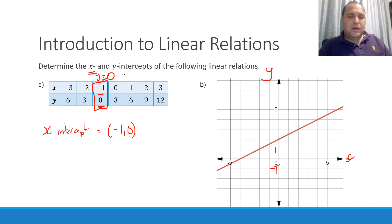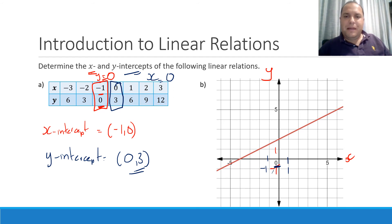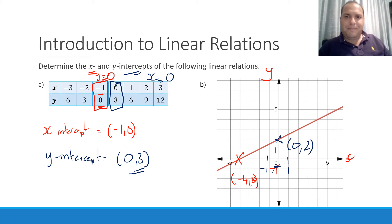For our y-intercept, the same sort of idea, but this time we want to know when x equals 0. Our y-axis has an x-value of 0. Looking at our table, there is where our x-value is 0, and so our y-intercept is going to be 0, 3. Looking at our graph, we can just read off these coordinates very easily. Our x-intercept — where we cut the x-axis — is negative 4, 0. And for our y-intercept, that will be 0 for our x-coordinate and 2 for our y.